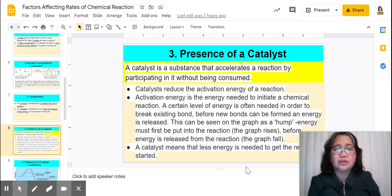And then the third factor is the presence of a catalyst. A catalyst is a substance that accelerates a reaction by participating in it without being consumed. There are two kinds of catalysts. When we speak of a catalyst, we speak of a positive catalyst which indeed accelerates the reaction or increases the rate of the reaction.